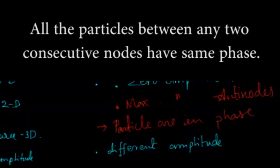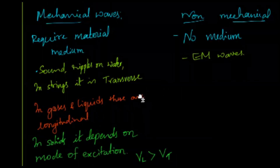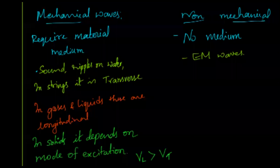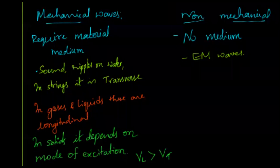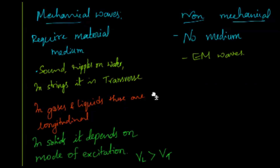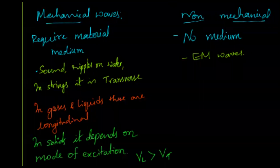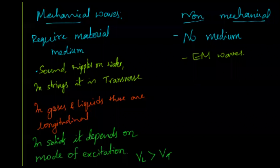Based on the medium involved in propagation, waves can be classified into mechanical and non-mechanical waves. Mechanical waves require a material medium for propagation — without a medium, they cannot travel. Non-mechanical waves require no medium. The example of non-mechanical waves is electromagnetic waves — the sunlight we receive from the sun travels through space with no intervening medium between the sun and the earth.